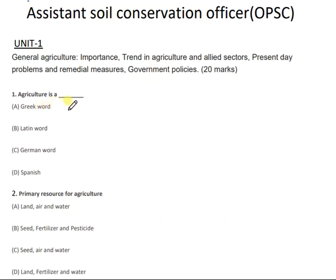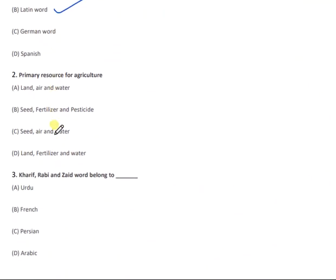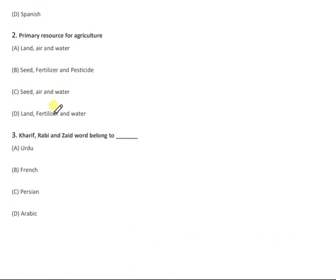Question 1: 'Agriculture' is which type of word? The right answer is option B — agriculture is a Latin word. Question 2: Which of the following are primary resources for agriculture? The correct answer is option A — land, air, and water.